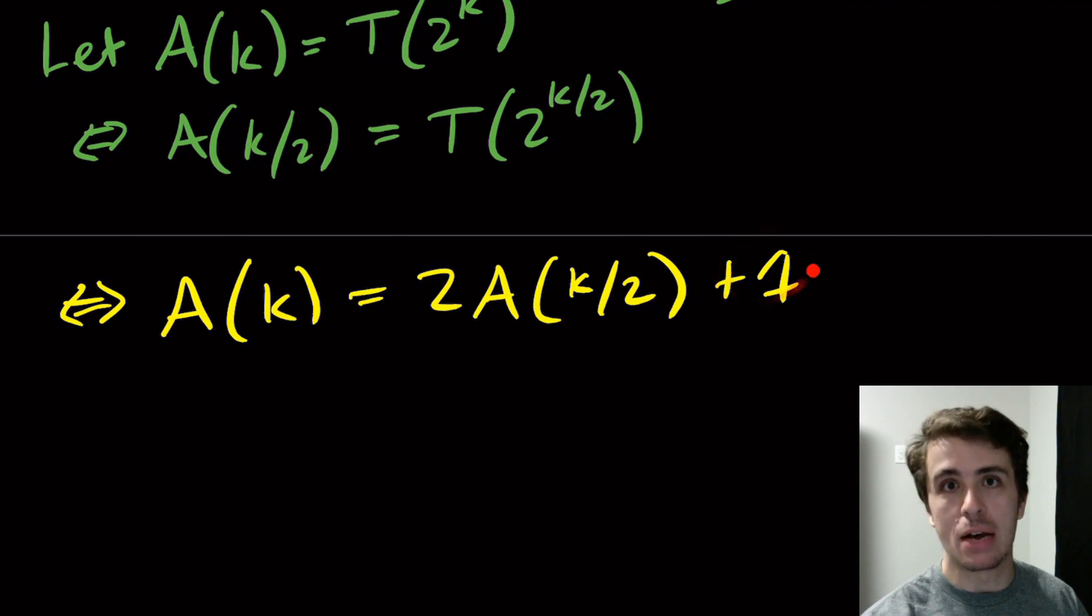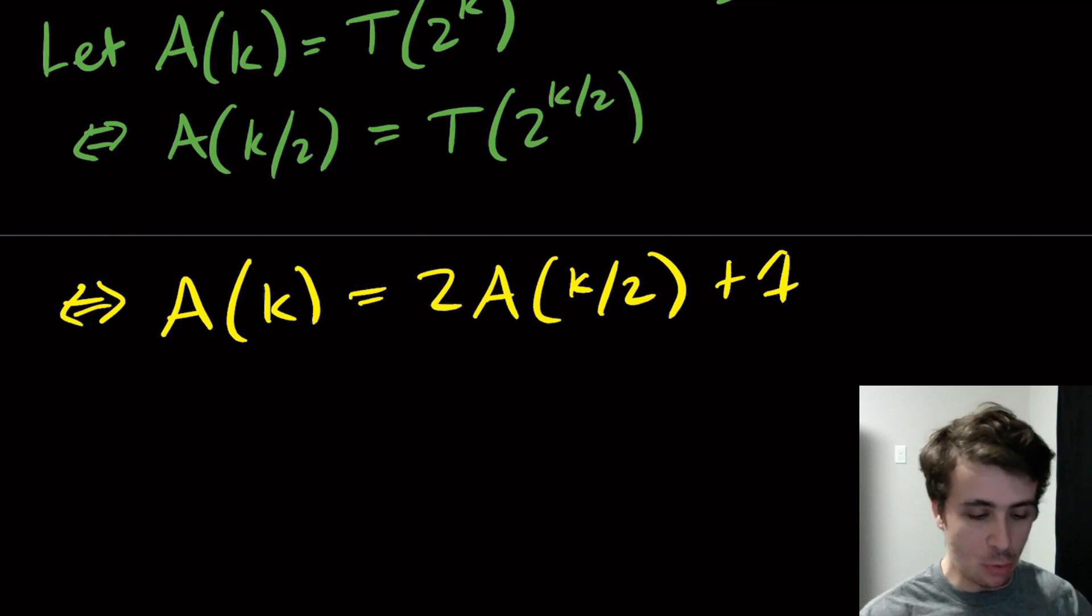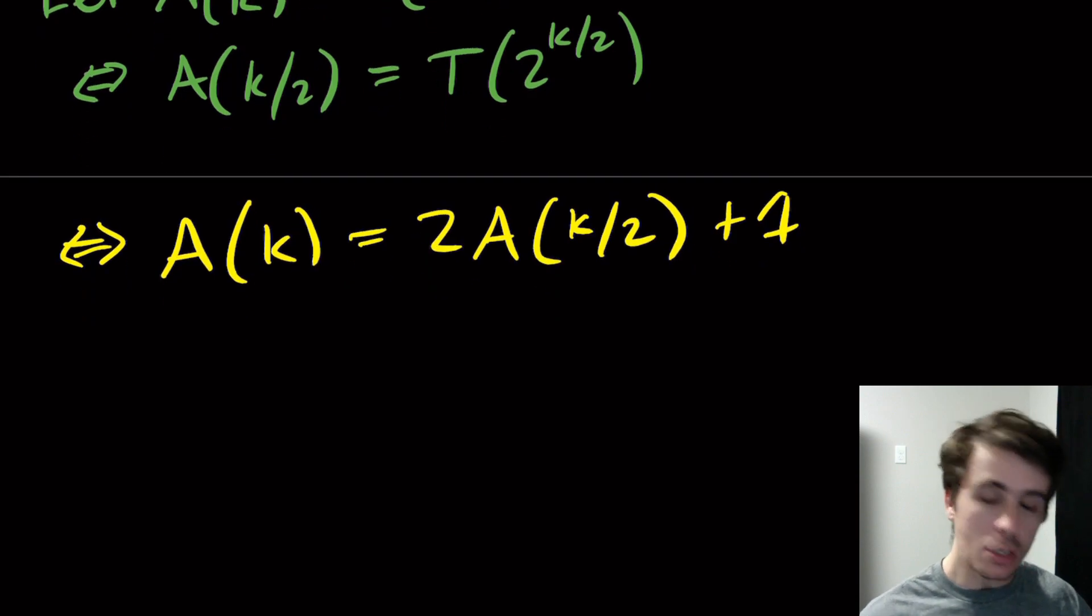The number of levels is going to be log k roughly because we're dividing by 2 every single time. And we actually have 2 versions of the same recurrence call, the same recursive call, and we actually kind of did something like this before.